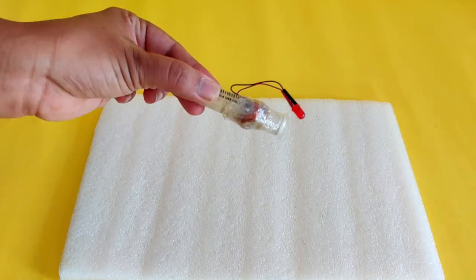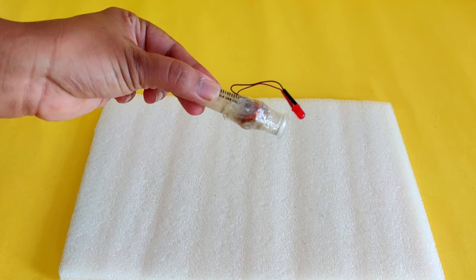The syringe generator setup consists of a syringe around which 36 standard wire gauge copper wire has been wound 400 times. As winding the wire 400 times is a time consuming process, a readymade setup has been provided along with the kit. The wire has been secured with cello tape and the ends of the wire are connected to an LED.